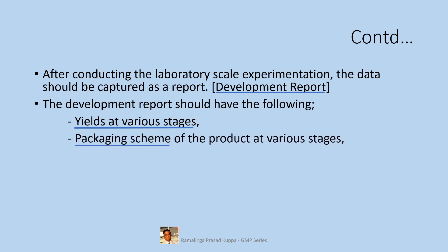Packaging scheme of the product at various stages: packaging scheme for primary pack and secondary pack at various stages of the process should be notified. It includes intermediate stage and final stage products also. If the product is light sensitive, it is necessary to use a black secondary package or any light-resistant container. The packaging scheme is totally dependent on the characteristics of the product.